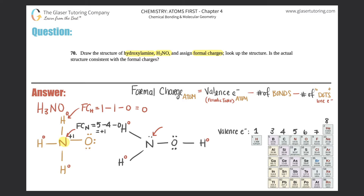Now let's do the nitrogen on the other compound. The formal charge for this nitrogen: valence is still five, minus how many bonds this nitrogen has — one, two, three — so minus three, minus the dots — one, two — so minus two. Five minus three minus two equals zero, so this nitrogen is neutral. We have a discrepancy: the nitrogen on the left is positive one, and the nitrogen on the right is neutral.